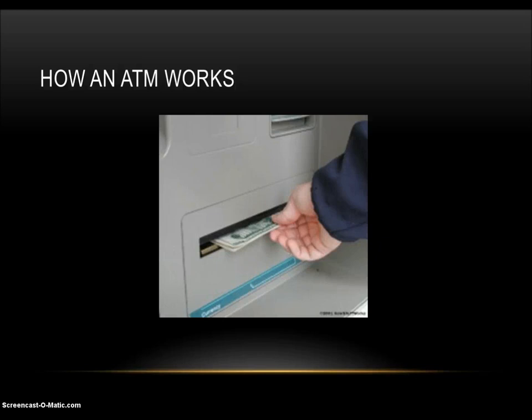The same thing happens with a bill that is excessively worn, torn, or folded. The number of rejected bills is also recorded so the machine owner can be aware of the quality of bills being loaded into the machine. A high reject rate would indicate a problem with the bills or the dispenser mechanism.